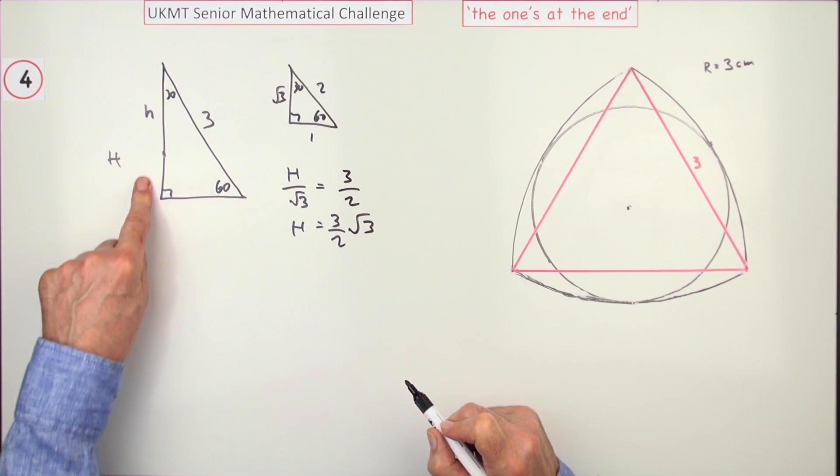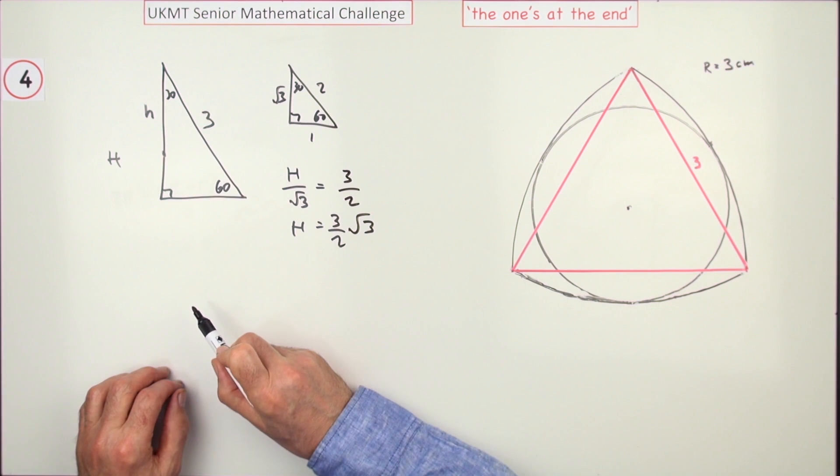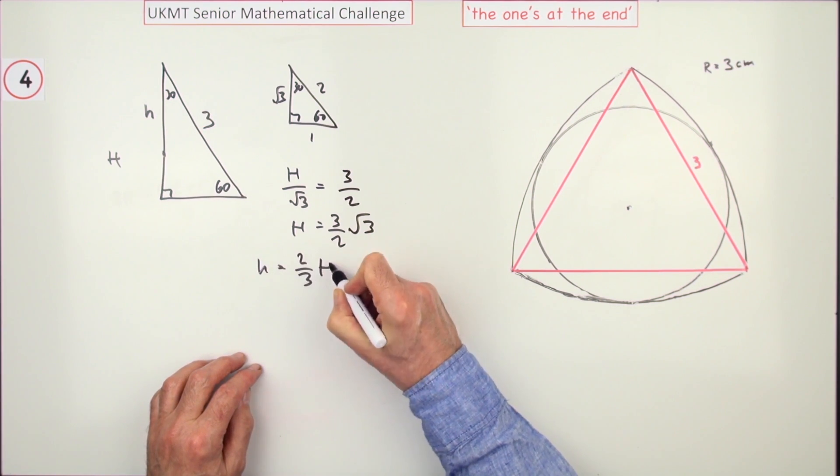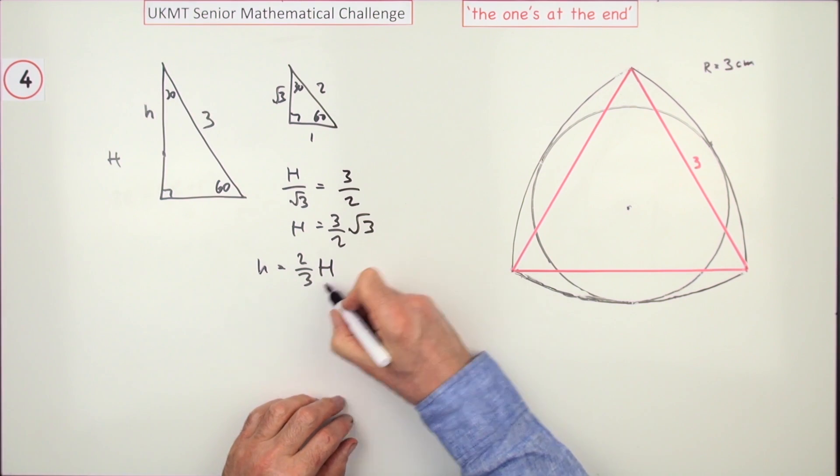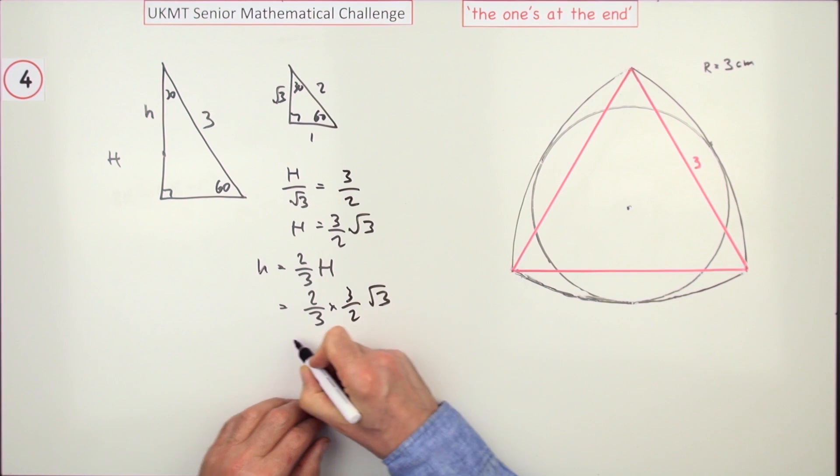Maybe I should put that down. That part's a third, so that part's two-thirds, which means this is going to be two-thirds the small distance, which will be 2/3 of 3 upon 2√3, which is just √3. You're almost there now.